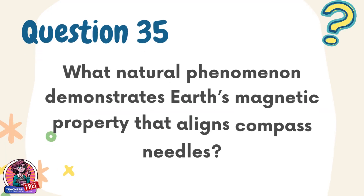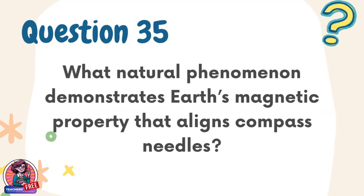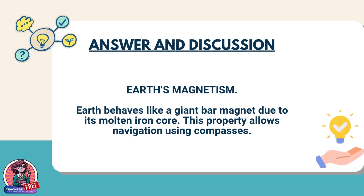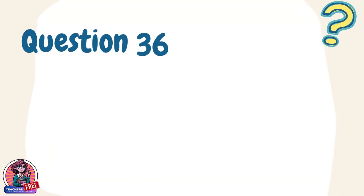Question 35. What natural phenomenon demonstrates Earth's magnetic property that aligns compass needles? Answer: Earth's magnetism. Earth behaves like a giant bar magnet due to its molten iron core. This property allows navigation using compasses.